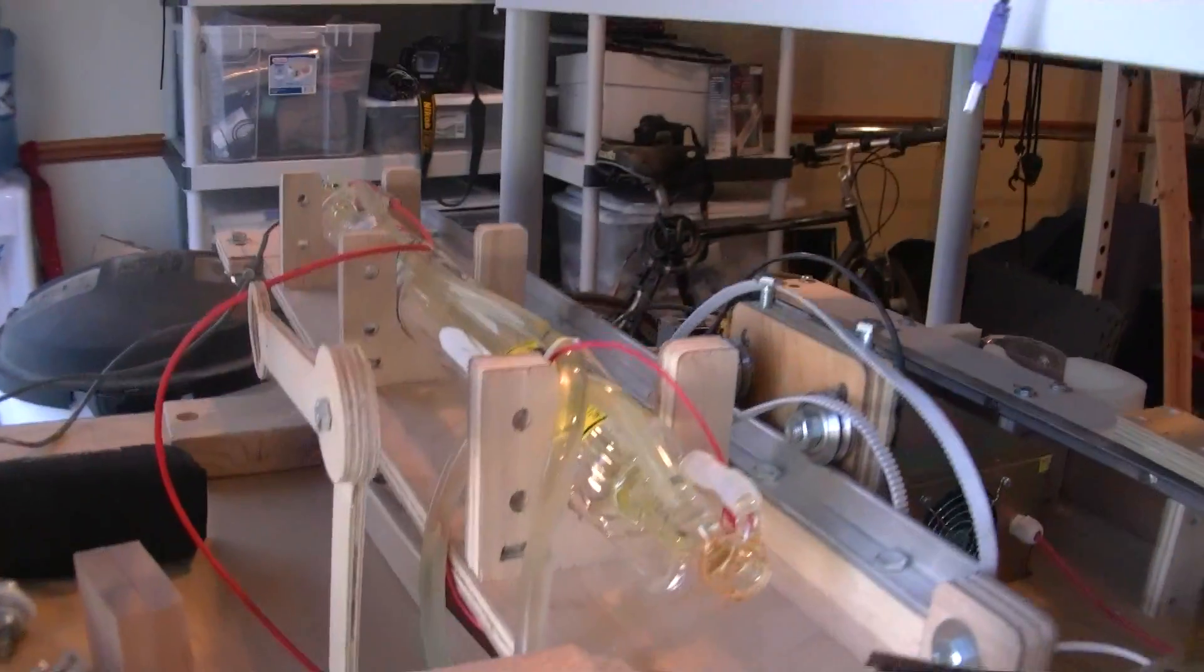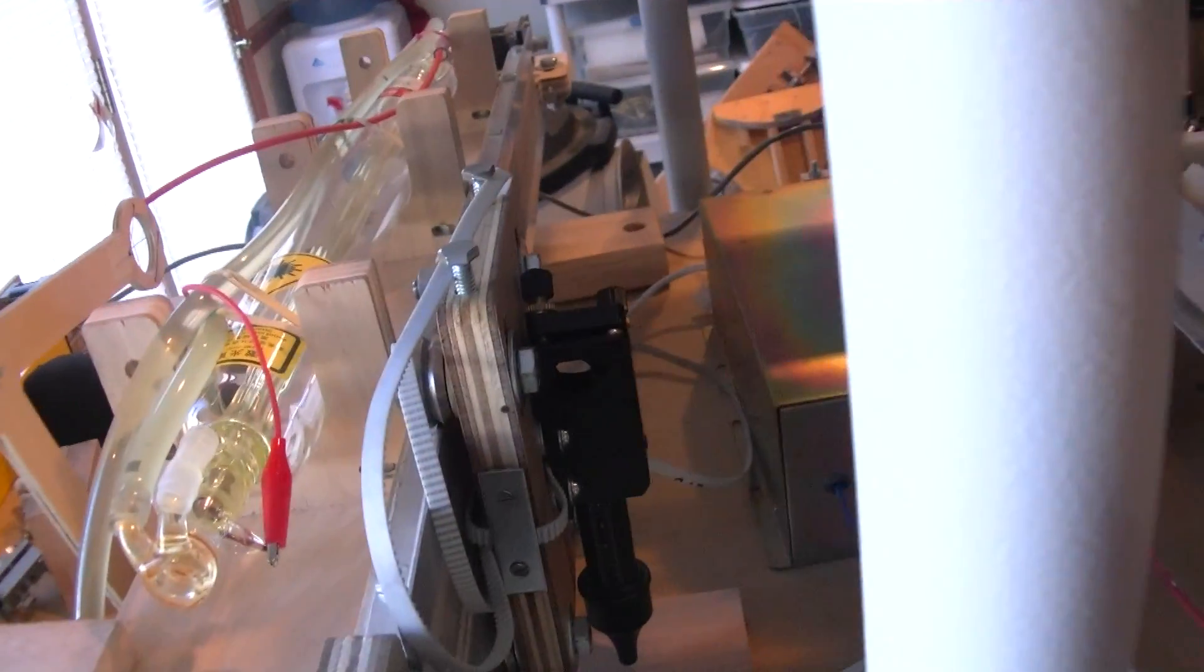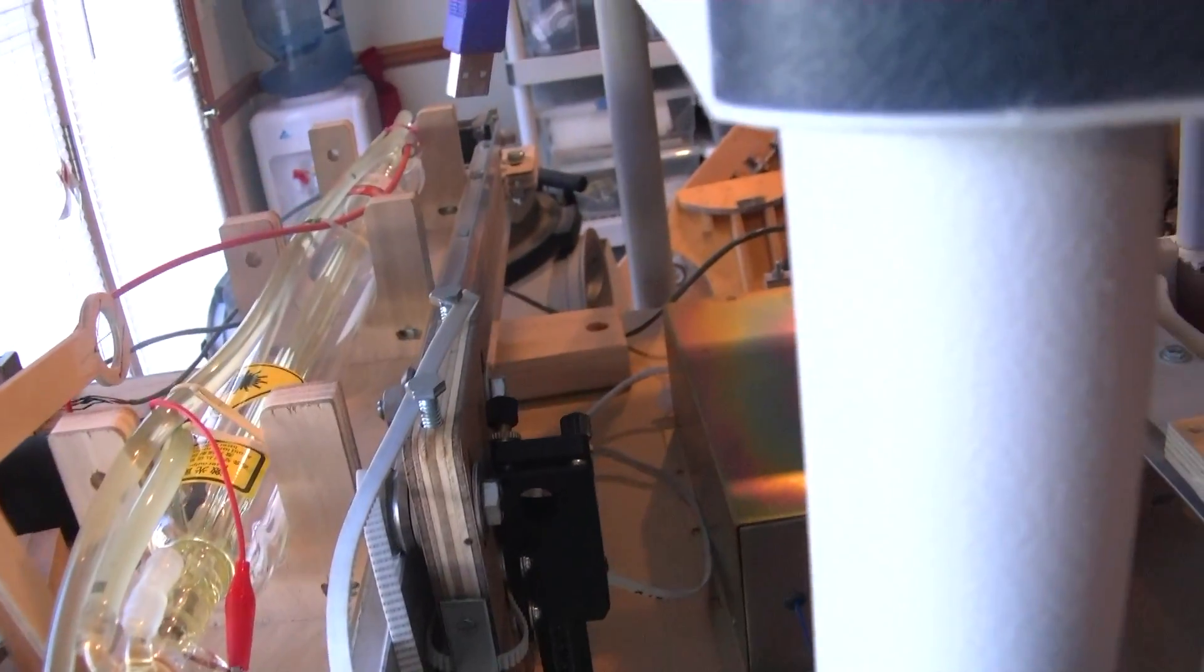The laser tube is there. It's the big glass tube, as you can see. And we've got bounce mirrors, one, two, and we've got a laser head which is fitted to the sliding part of the gantry.